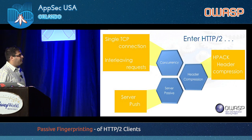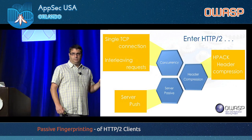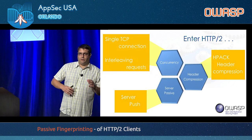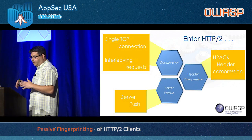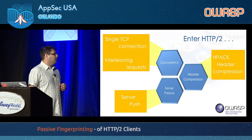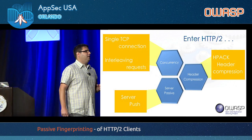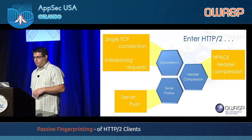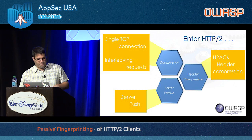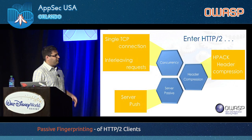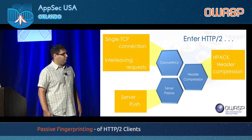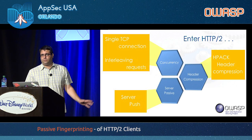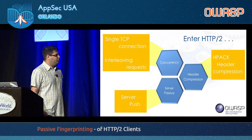Enter HTTP/2. For concurrency, we no longer have multiple TCP connections — requests are now interleaved or multiplexed within a single TCP connection. Header compression was introduced via HPACK. And the concept of server push was integrated into the RFC, though clients can opt out — it's not mandatory.